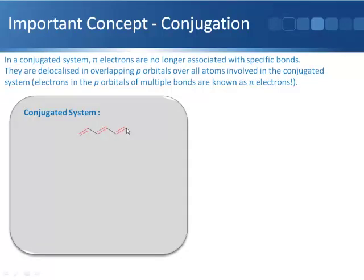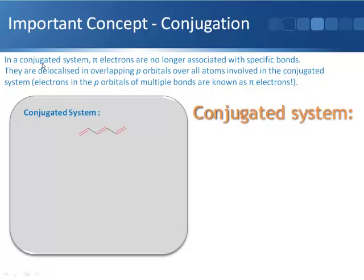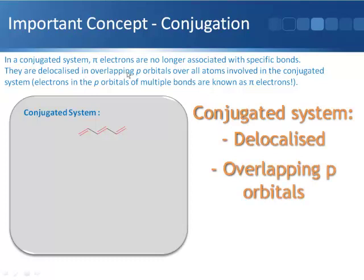For double bonds to be conjugated, they need to be no more than one single bond apart. In a conjugated system, pi electrons are no longer associated with specific bonds. They are delocalized in overlapping p orbitals over all atoms in the conjugated system.